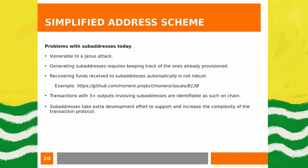Problems with sub-addresses today. First and most significant: they're vulnerable to the Janus attack. If someone suspects you own a particular sub-address and sends you Monero, they can construct the transaction so that if you confirm receipt, you unknowingly reveal that you own that sub-address. It's an undetectable attack that would be patched with this upgrade.